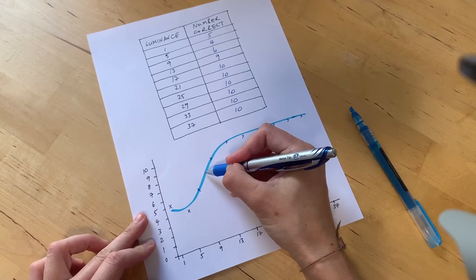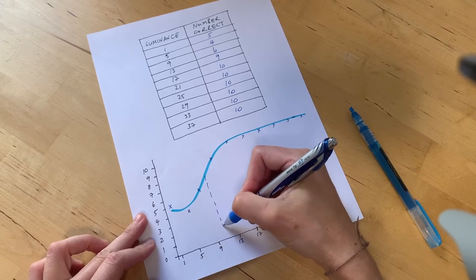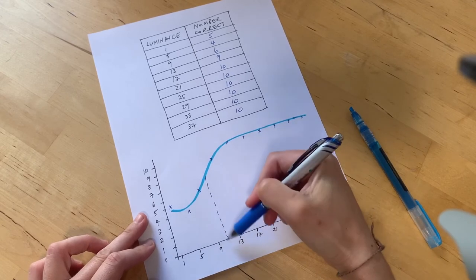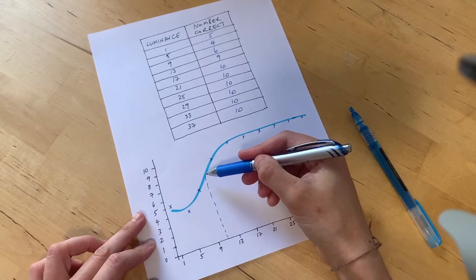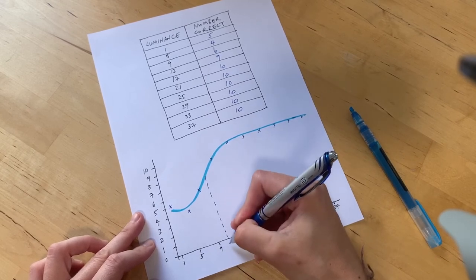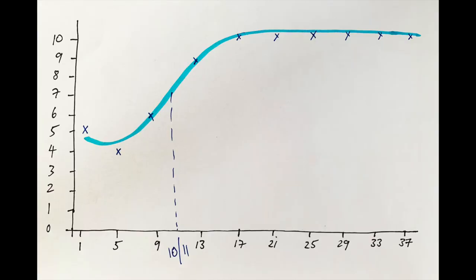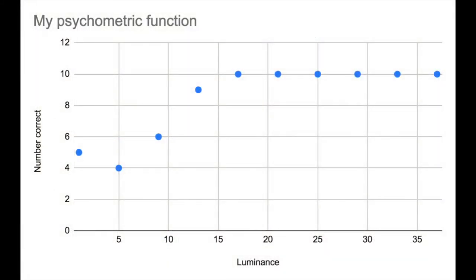And so somewhere about in the middle of this is where I see the change and for me that's about 10 or 11. And here's what it looks like on the Google sheet.